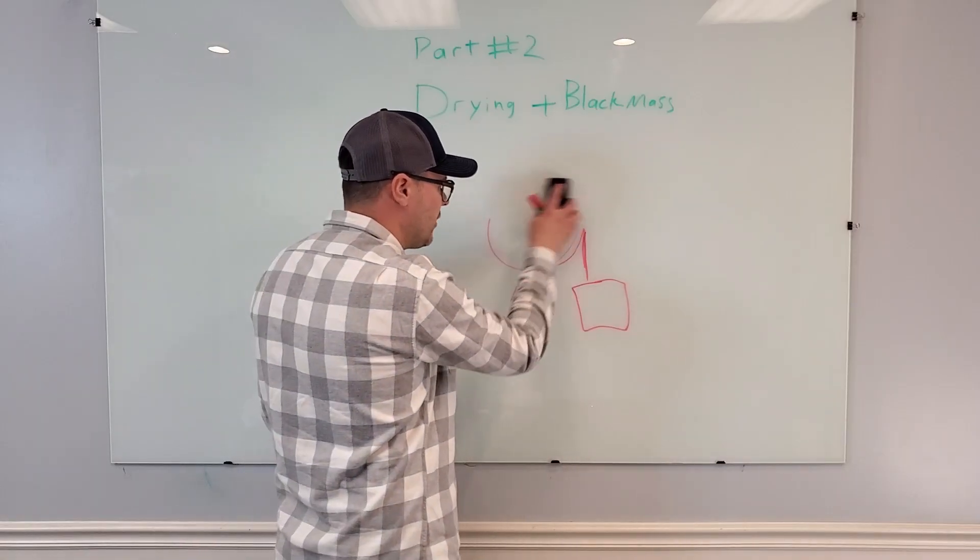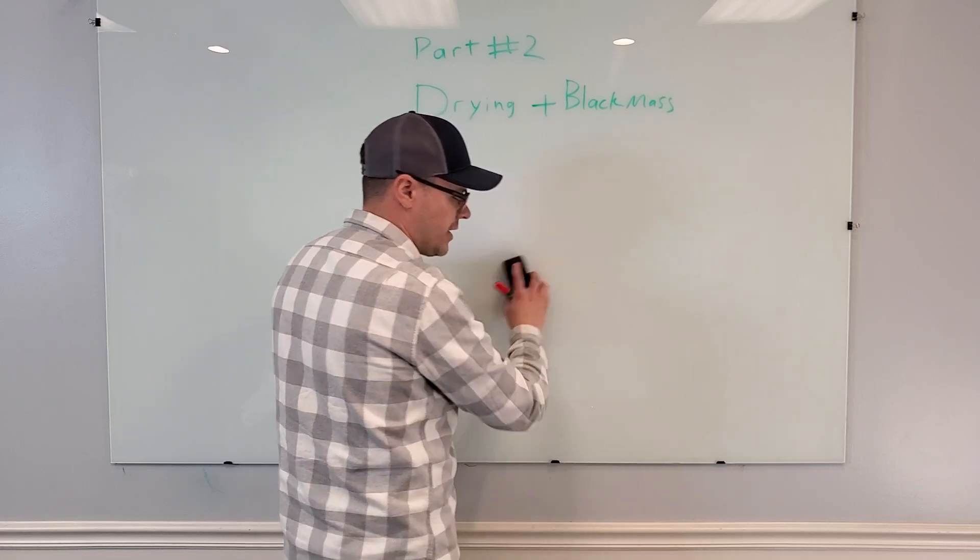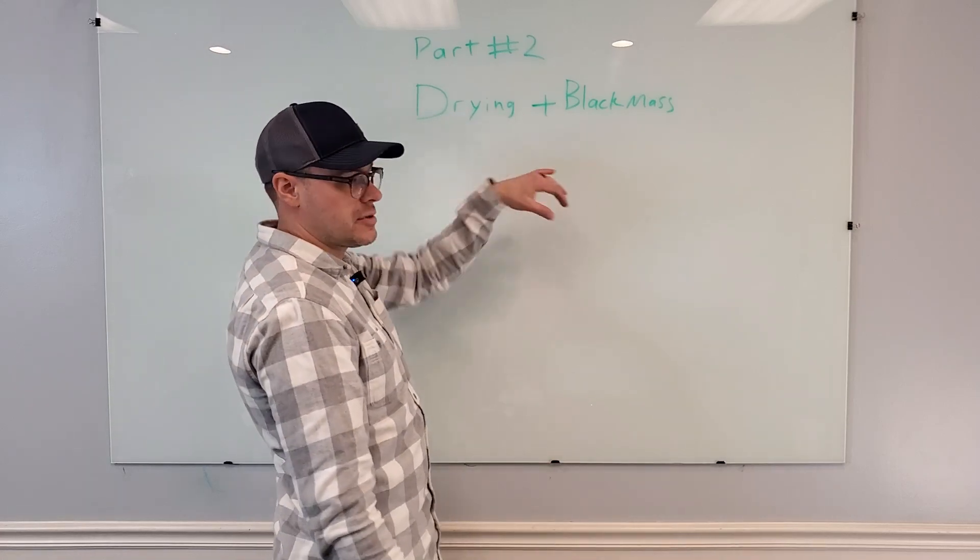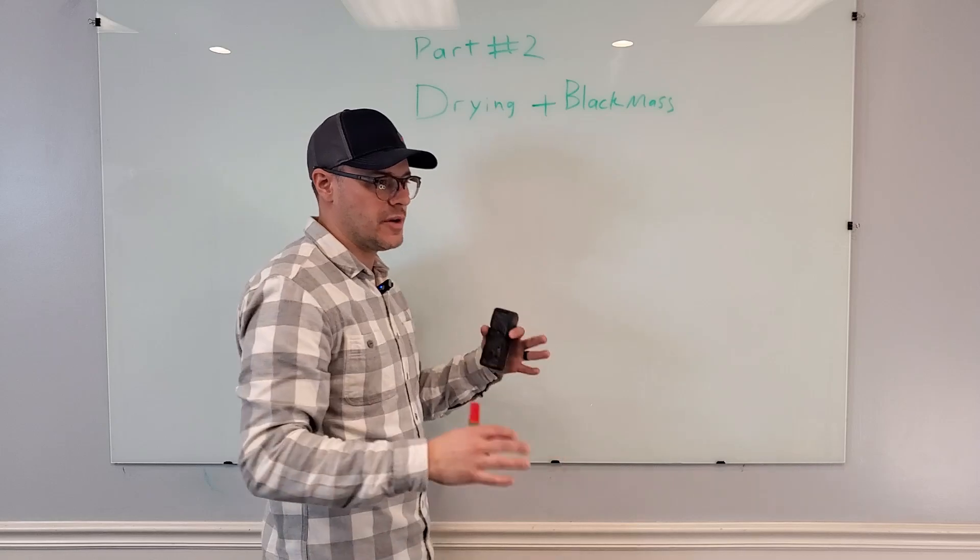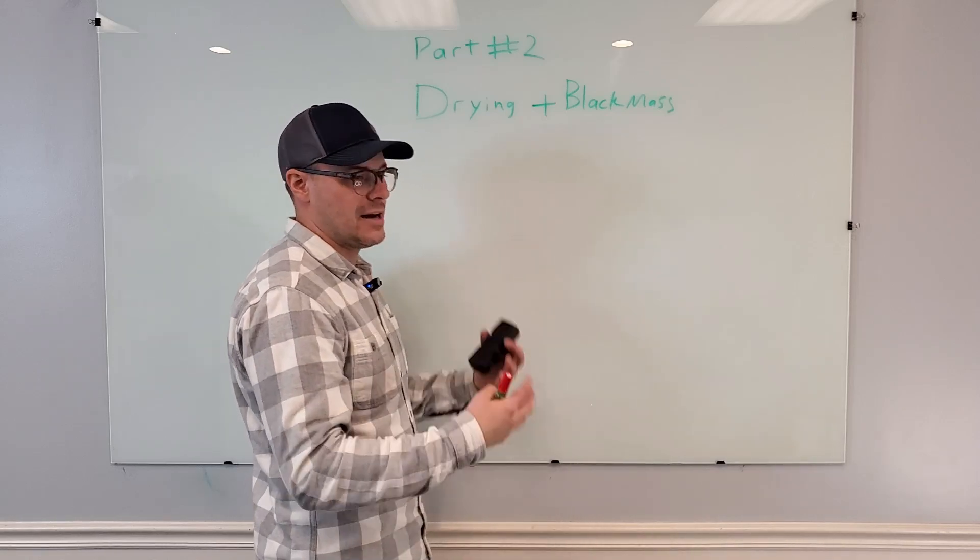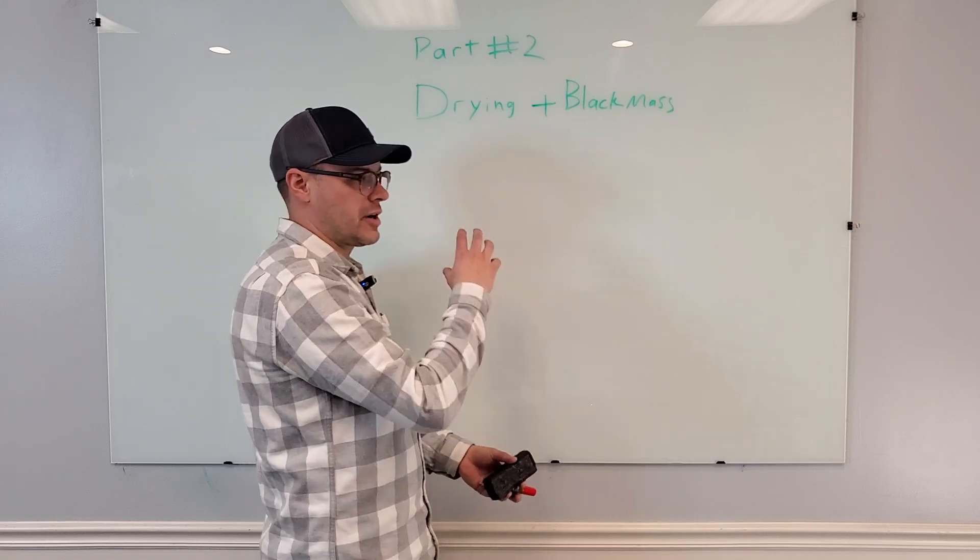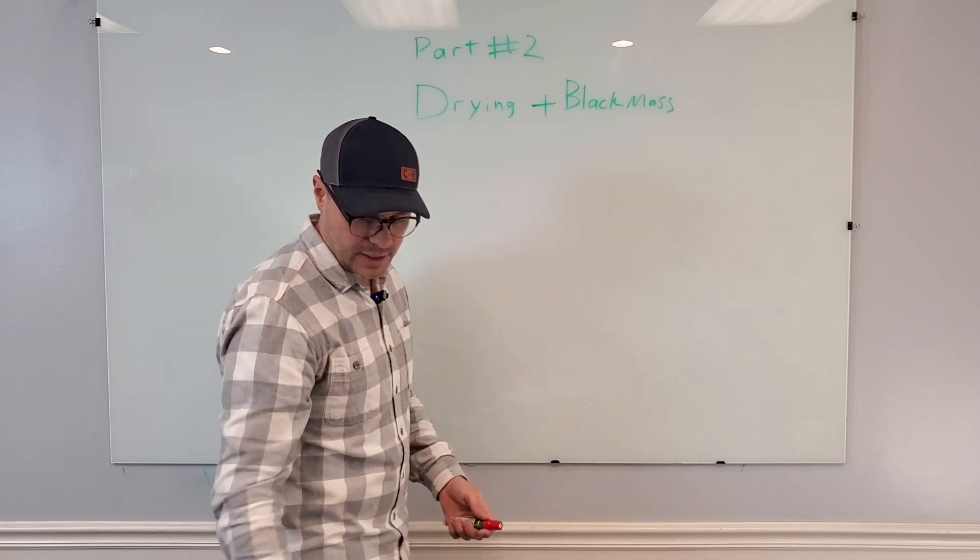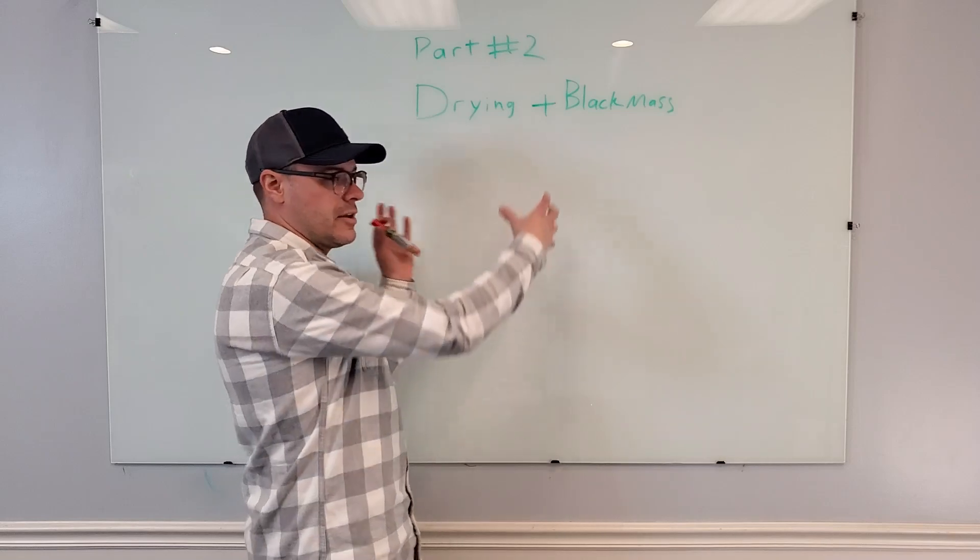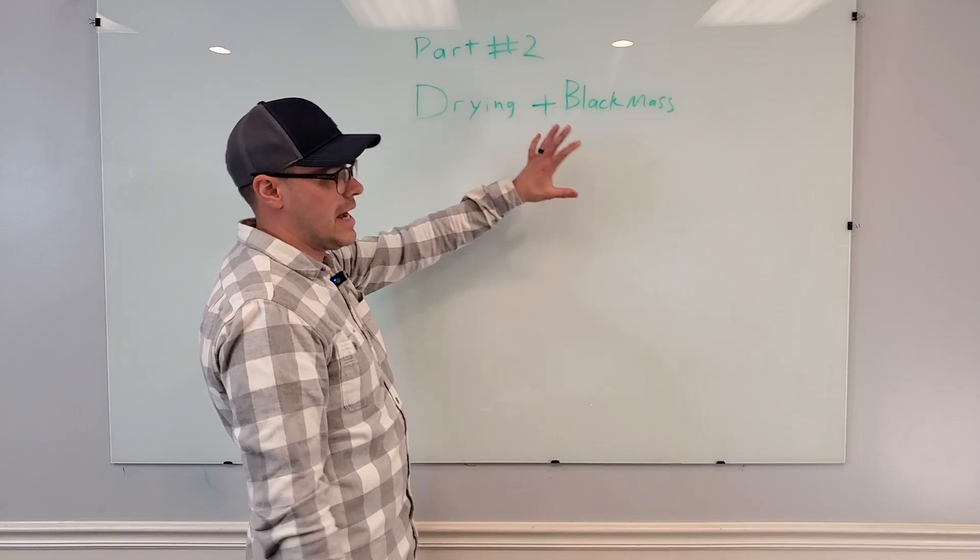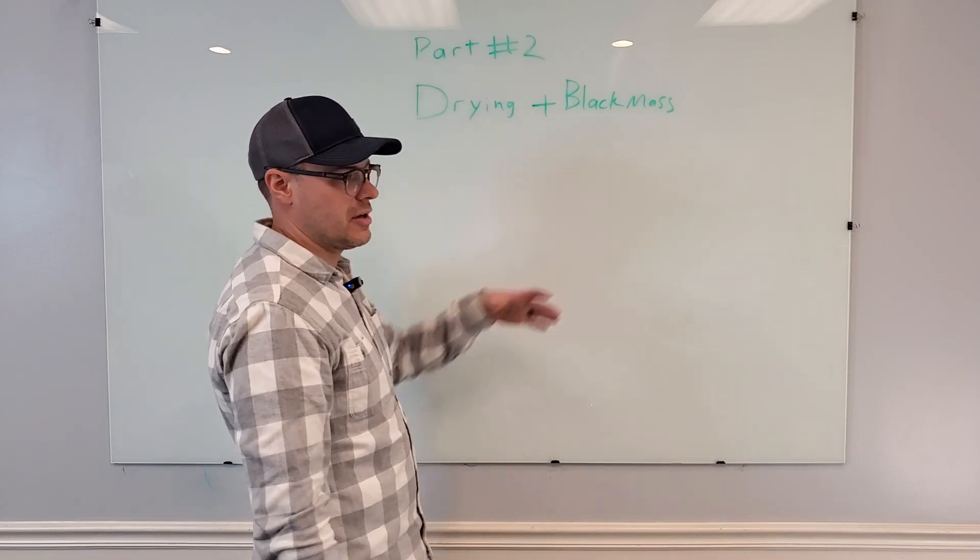The black mass that you're going to get off of this first cut and screening is going to be your cleanest, most high-value black mass. As it goes further throughout the stream you're going to get more graphite and other items, but this here has your highest concentration of valuable materials.